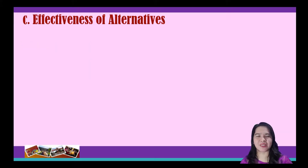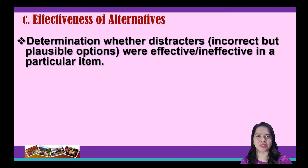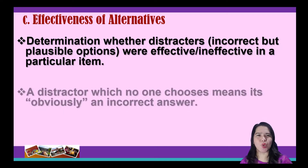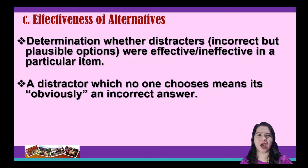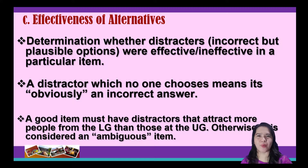Finally, we have the last criterion, which is the effectiveness of alternatives. Others call it distractor analysis. This is usually done to find out which distractors — incorrect but plausible options — were effective or ineffective in a particular item. It must be noted that a distractor which no one chooses means it is obviously an incorrect answer. To consider an item good, it must have distractors that attract more people from the lower group than that of the upper group. Otherwise, it is an unambiguous item.